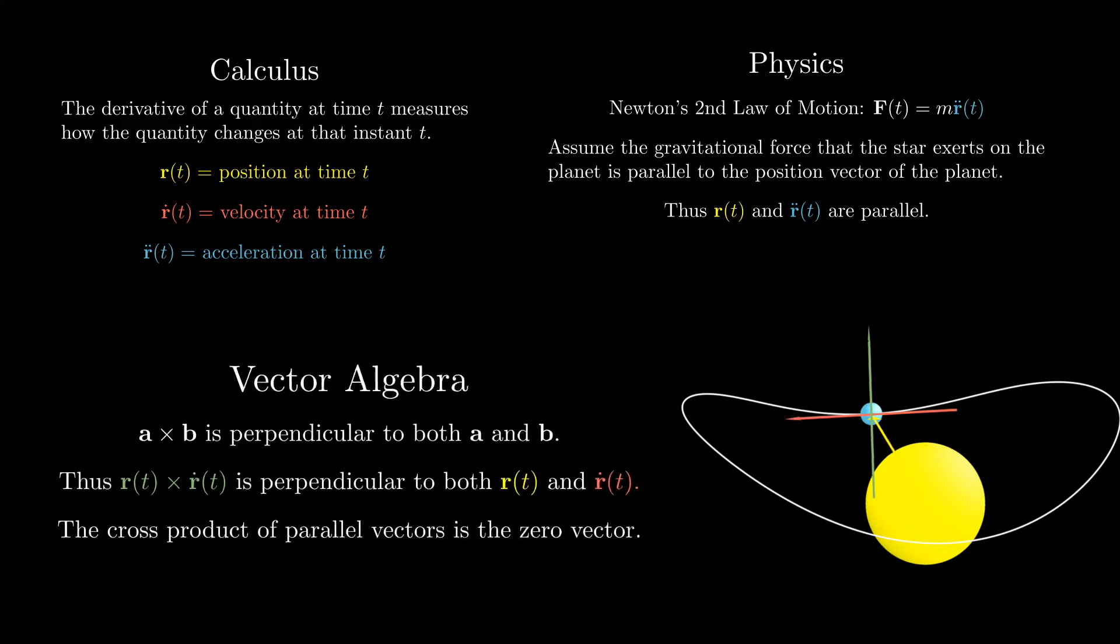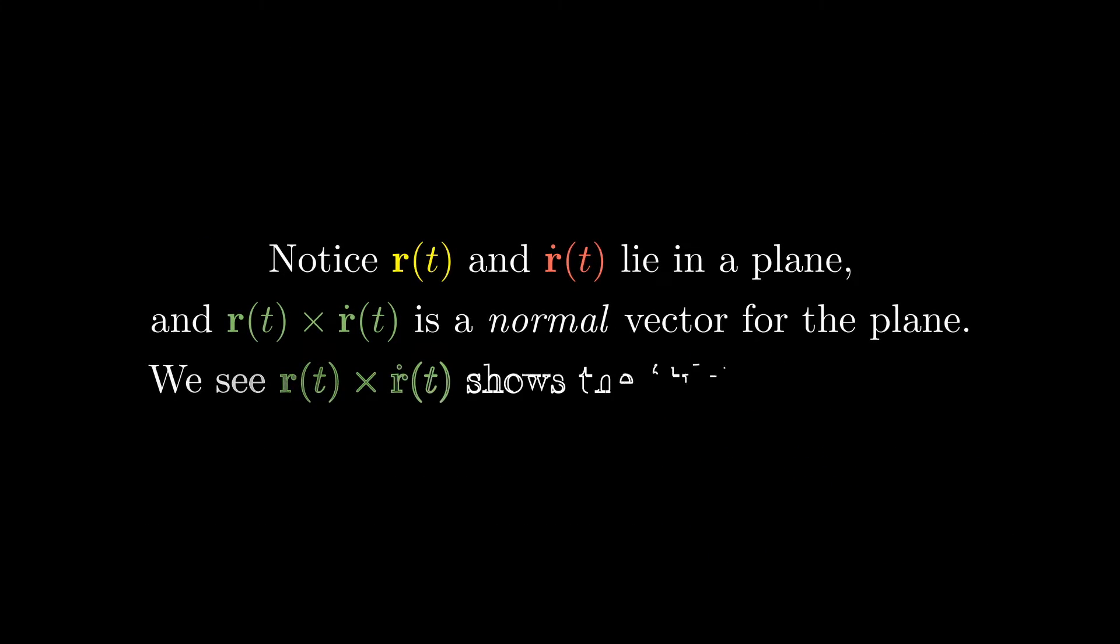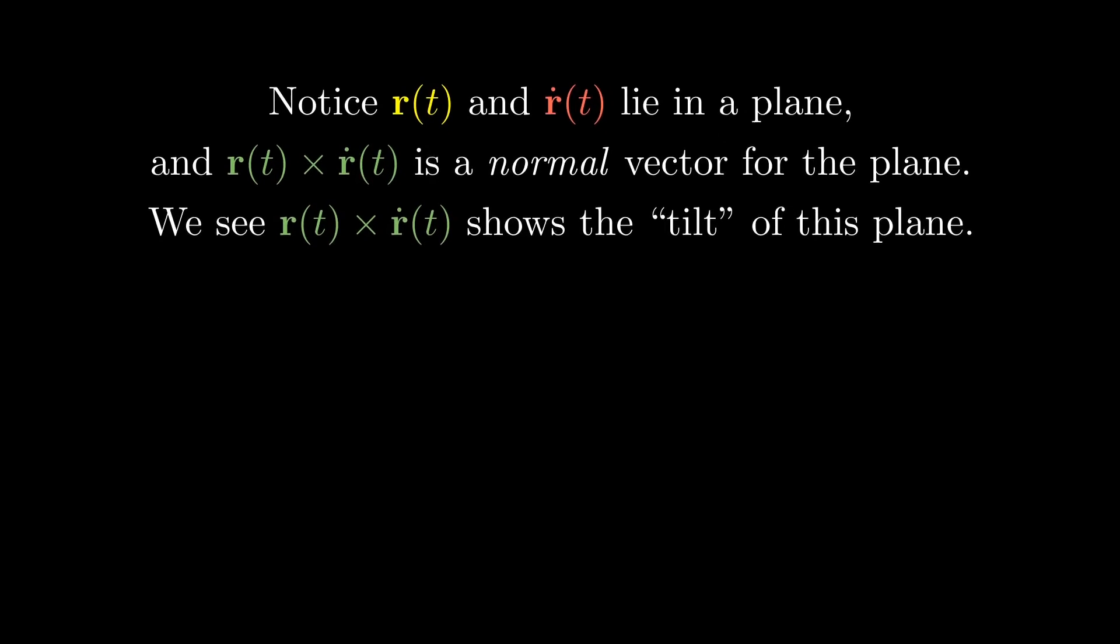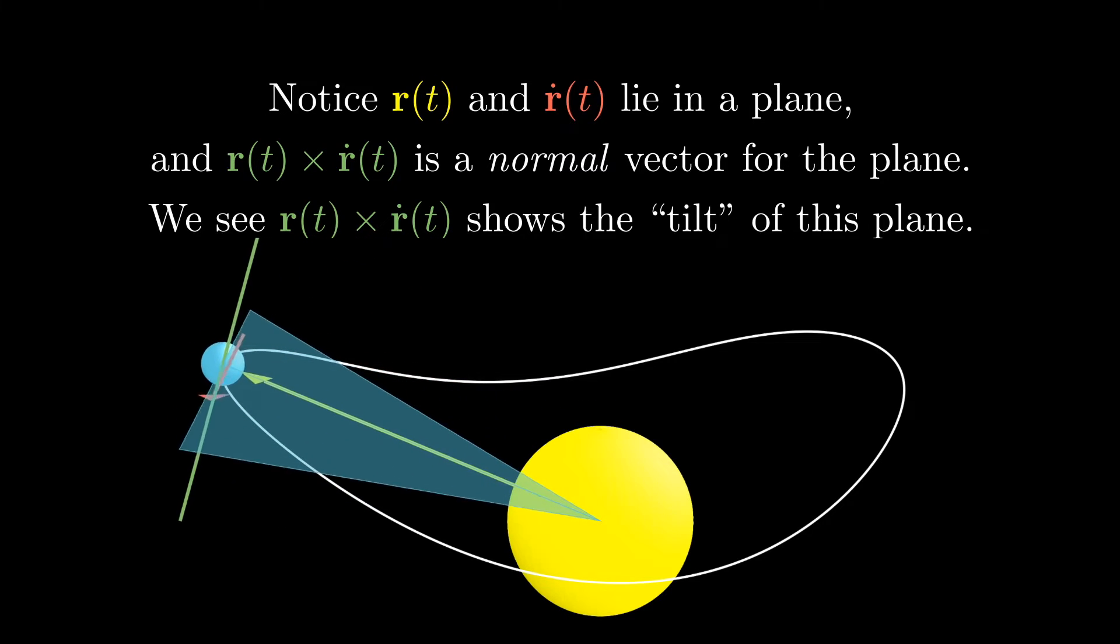Here's our planet and our star with its position, velocity, and cross product. Notice that the position r and velocity r dot lie in a plane, and r cross r dot is a normal vector for that plane. You see that that normal vector shows us the tilt of this plane.